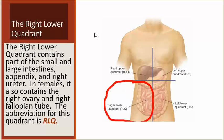The right lower quadrant contains part of the small and large intestines, the appendix, and the right ureter. In females, it also contains the right ovary and right fallopian tube. The abbreviation for this quadrant is RLQ.